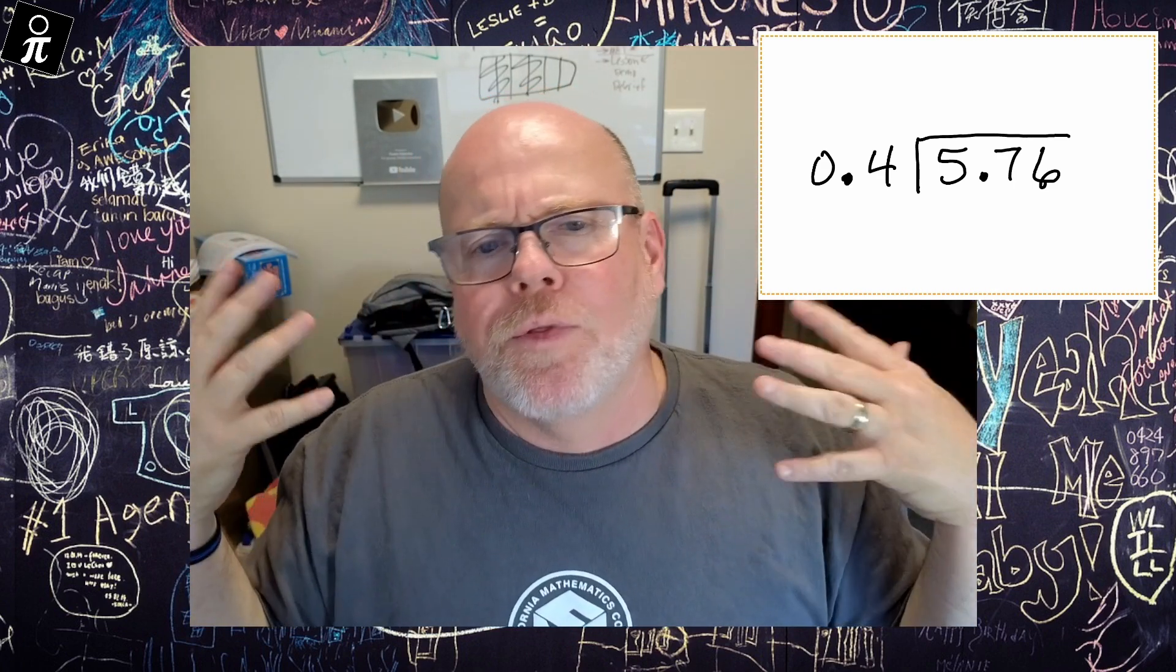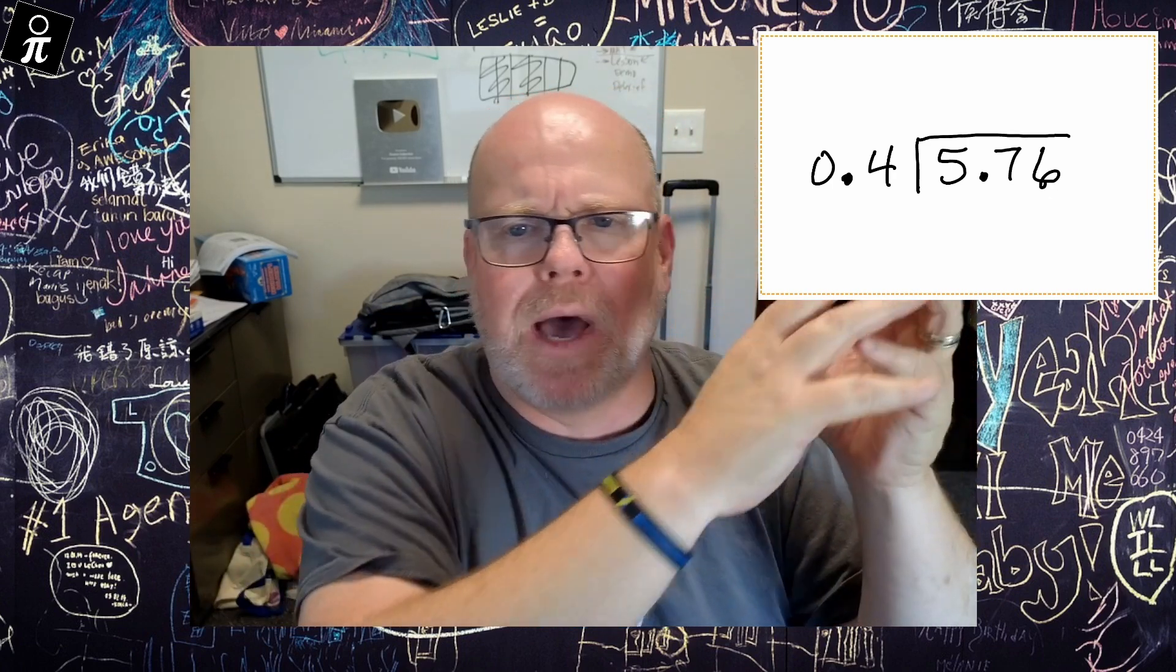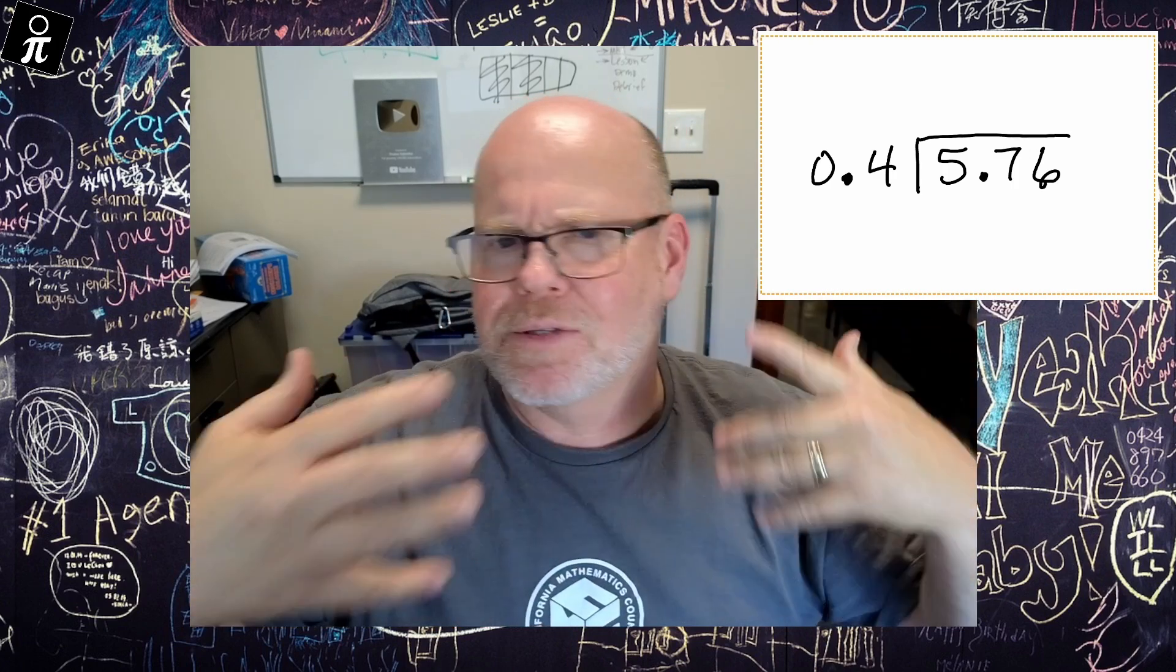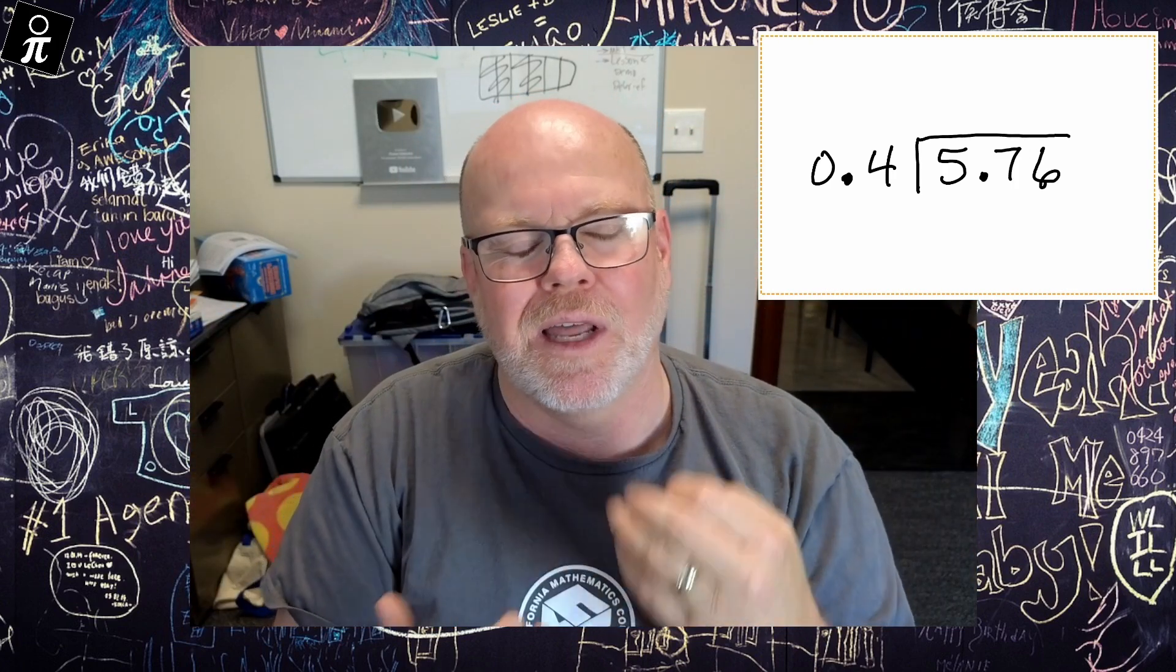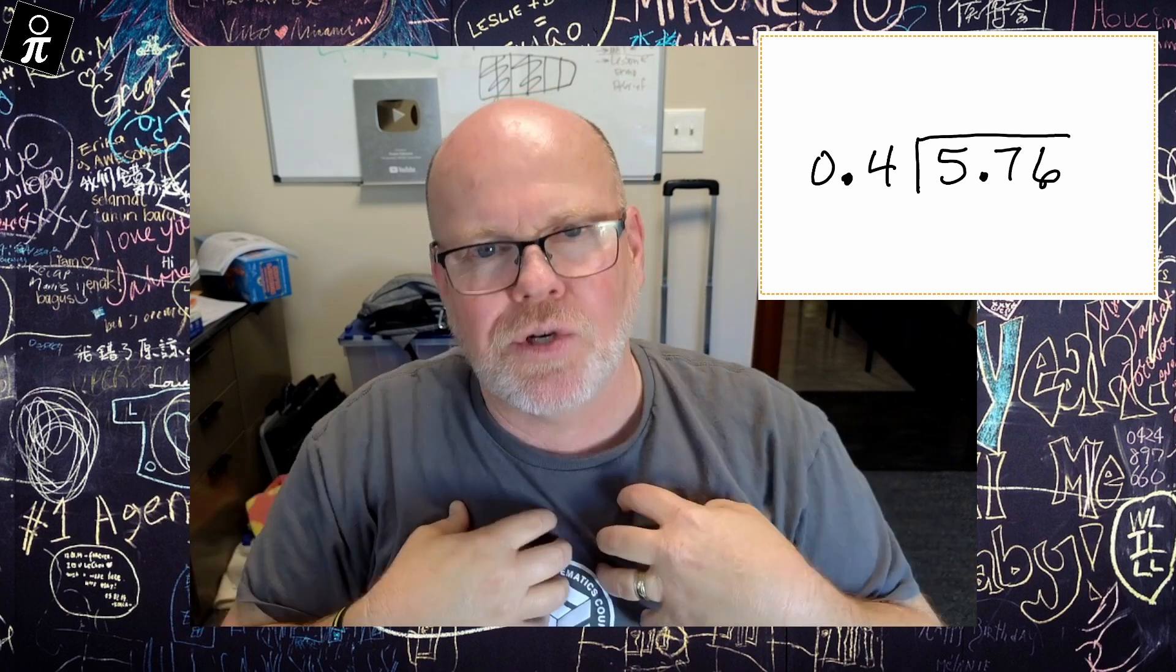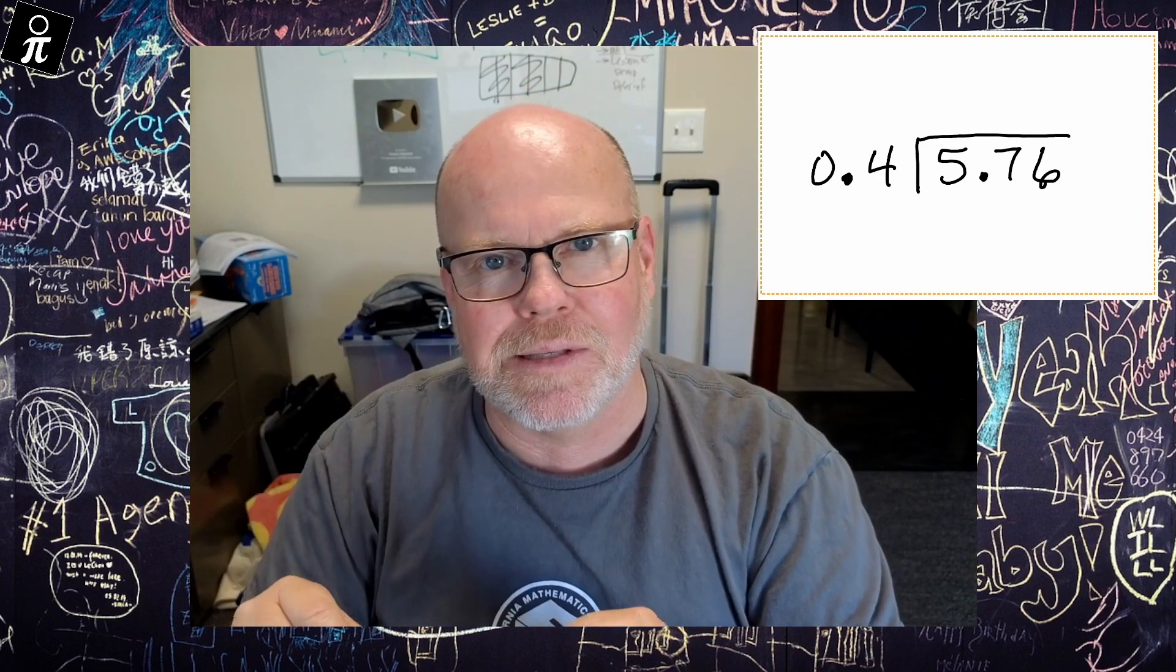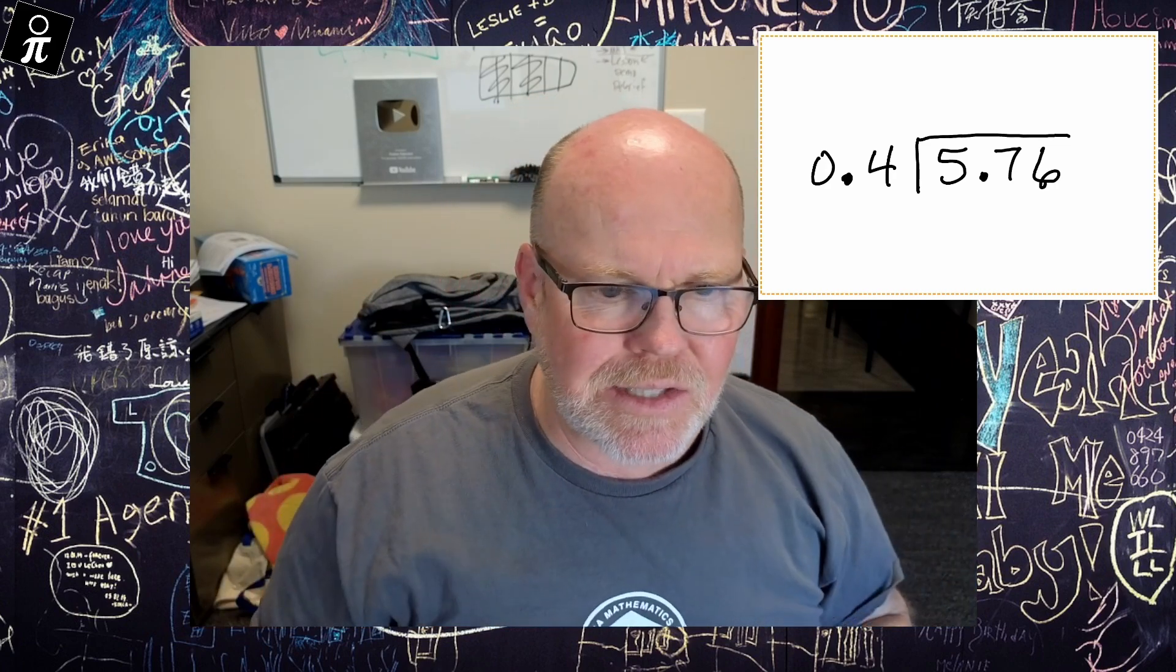We often know that the rule is swoopy swoopy because we don't know how to divide by a decimal, and so we swoopy swoopy and whatever we do to the outside, we have to do the inside. So in this video, I'm really going to focus on how do we as teachers or as parents explain that to the students in a way that makes sense.